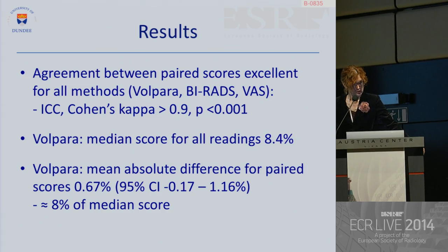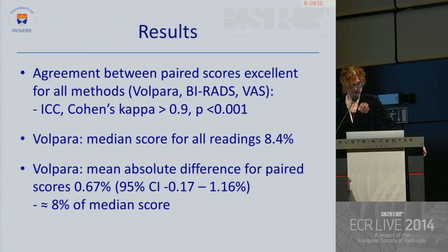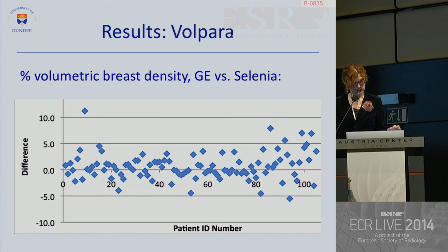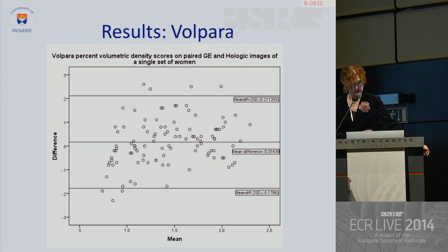For all the methods, agreement between the paired scores for each woman was excellent, with intra-class correlation coefficient and Cohen's kappa greater than 0.9. For Volpara, the median score for all readings was 8.4%, and the mean absolute difference for the paired scores was 0.67%, which equates to about 8% of the median score. The scatter plot shows for each woman the difference between the GE and Selenia mammograms — a positive integer means the GE mammograms were read by Volpara as being slightly denser — and there doesn't appear to be much systematic bias, confirmed on the Bland-Altman plot, where the average difference is only just above zero with no evidence of any proportional error.